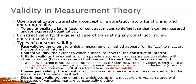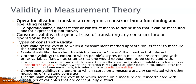Convergent validity is similar but different from concurrent validity. Convergent validity indicates the extent to which scores on a measure are correlated with other measures of the same construct. For example, if a group of high school students took both SAT and ACT tests for a college application, the correlation between their scores on the two tests provides evidence for convergent validity because both tests measure the same construct of academic aptitude.